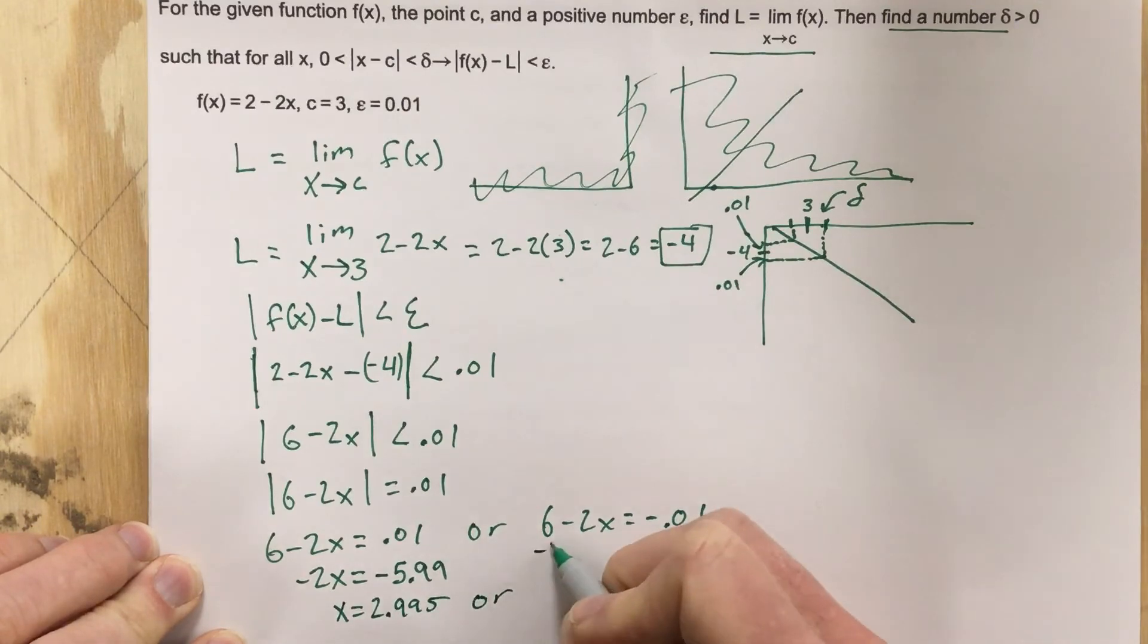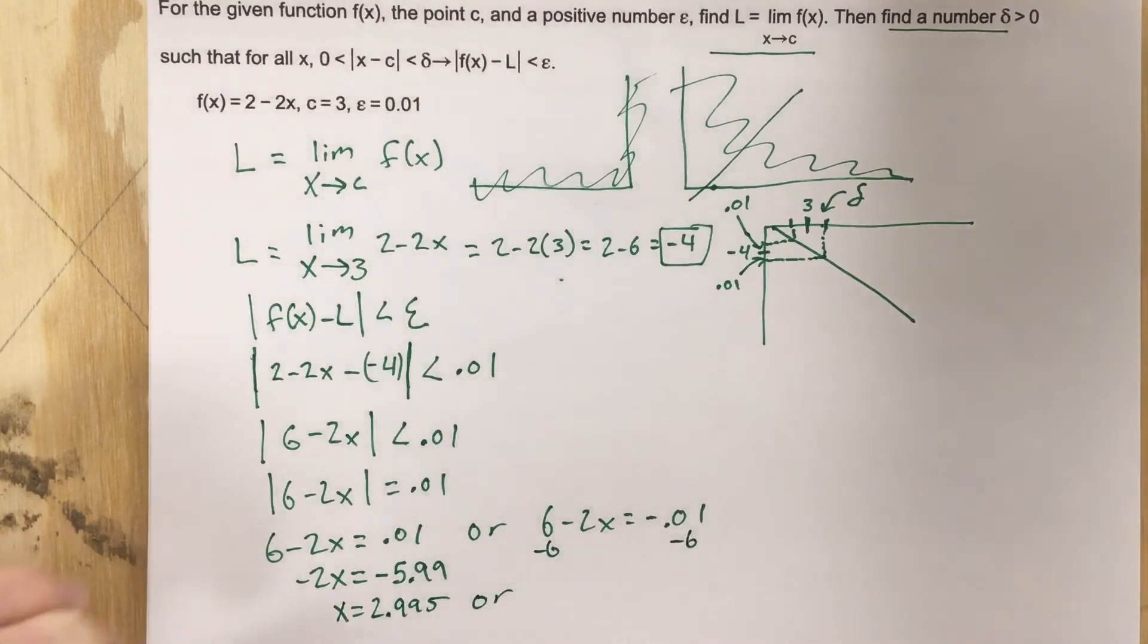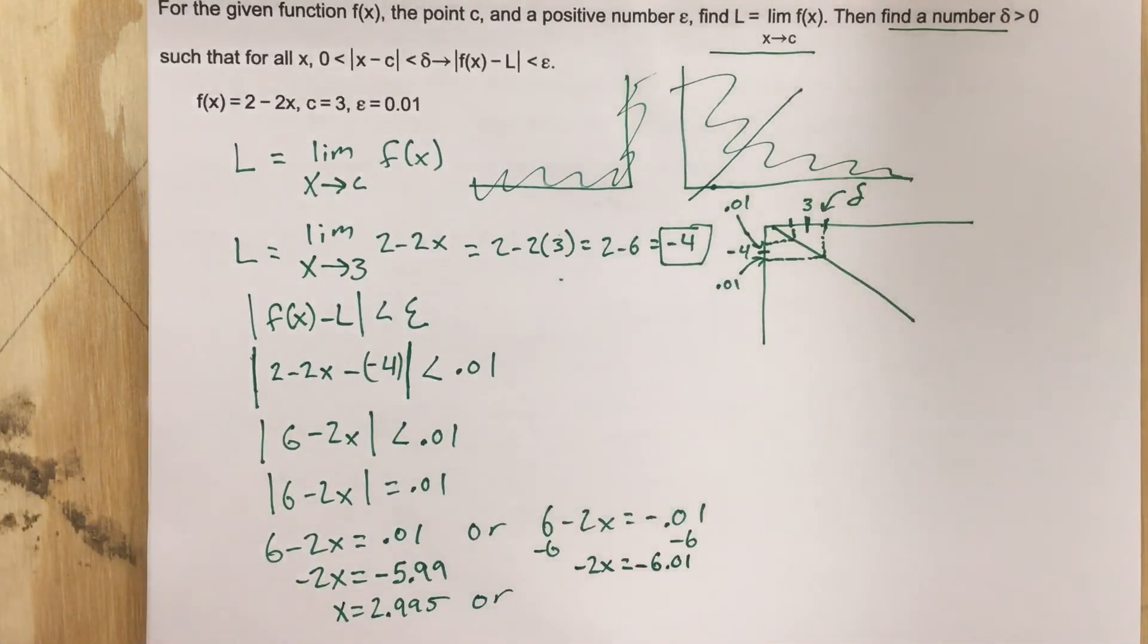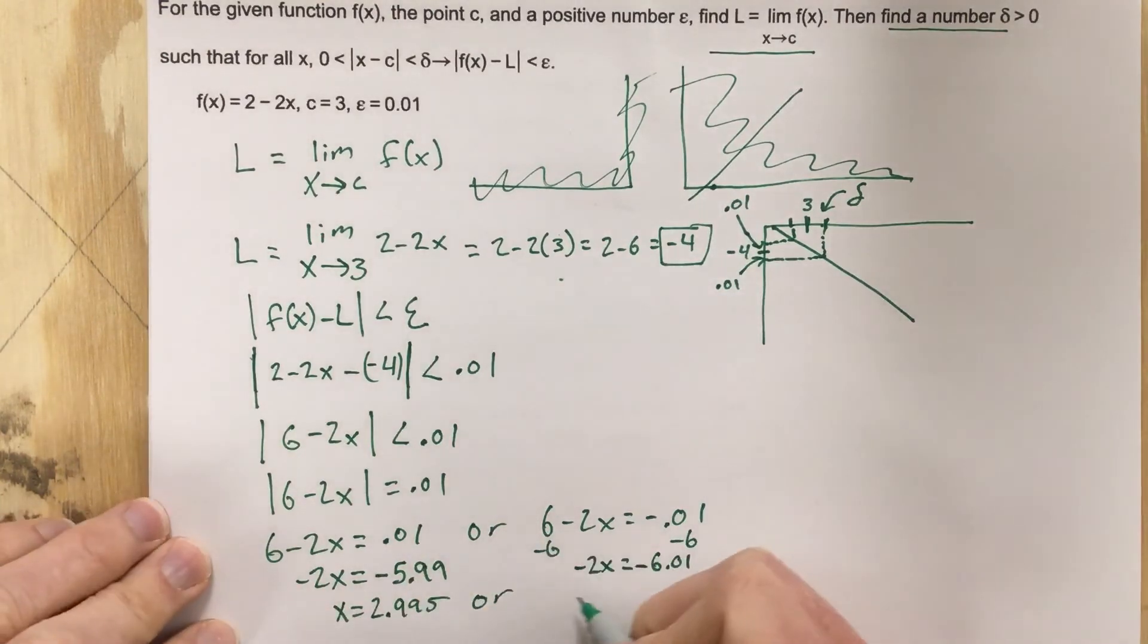Or subtract 6, and we're going to subtract 6, and we're going to get negative 2x equals negative 6.01. Divide by negative 2, and we get 3.005.